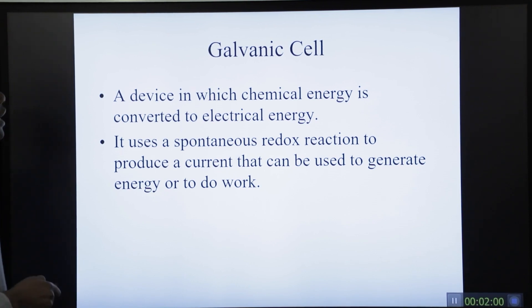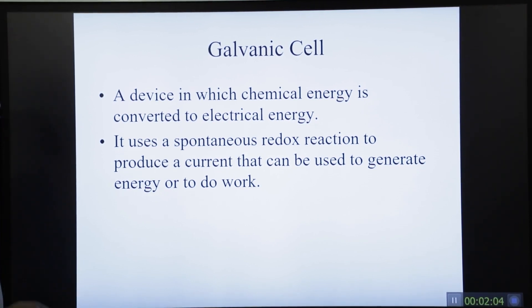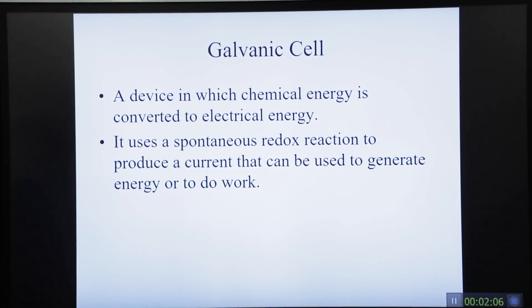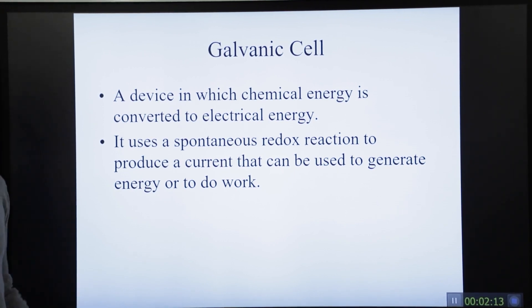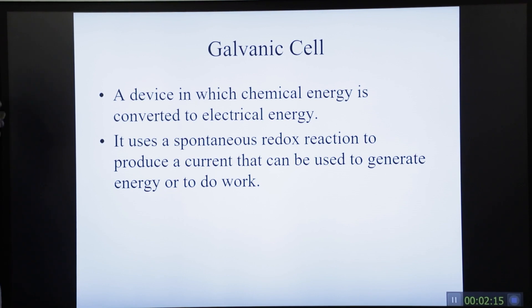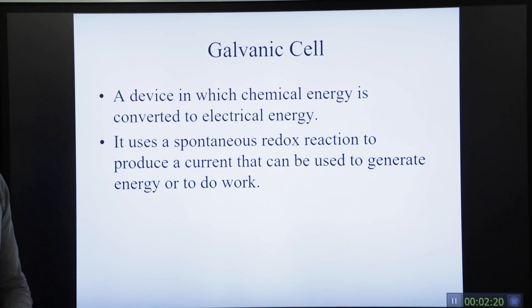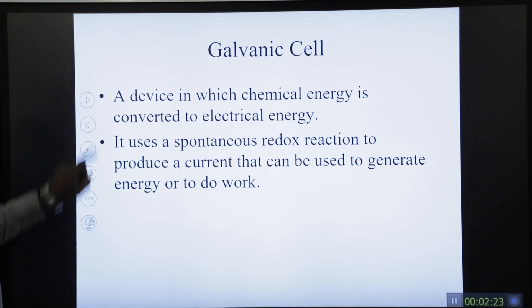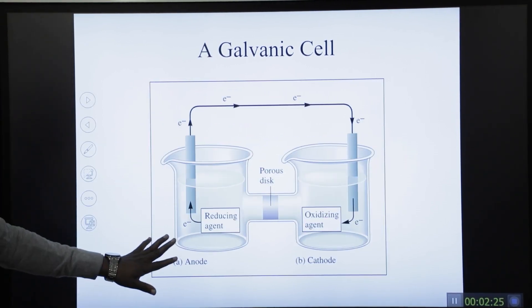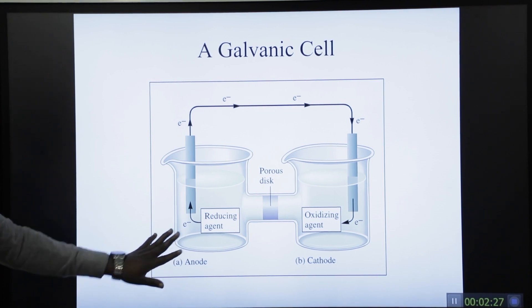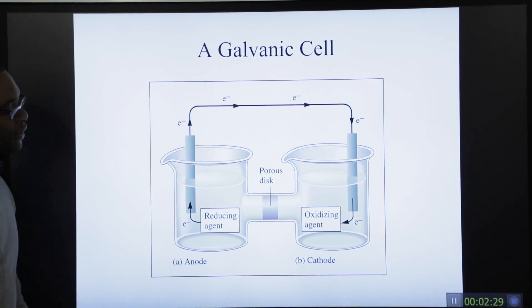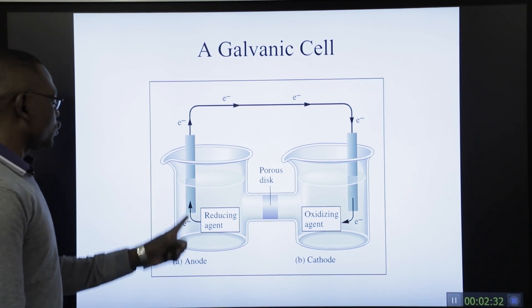A galvanic cell is a device in which chemical energy is converted to electrical energy. It uses a spontaneous redox reaction to produce a current that can be used to generate energy or to do work. We illustrated a diagrammatic representation of a galvanic cell, showing the anode and the cathode.